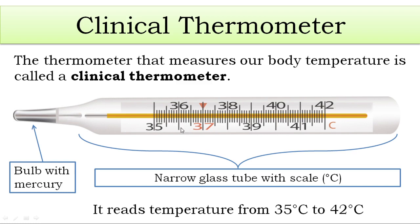Here we have an example picture of a clinical thermometer. It has a bulb at the tip — a shiny metal-like thing at the tip — but it is filled with mercury. It also has a long narrow glass tube.